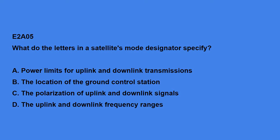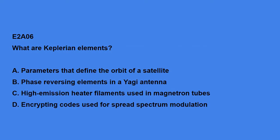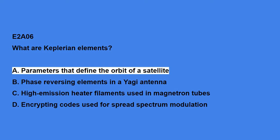E2A05: What do the letters in the satellite's mode designator specify? They specify the uplink and downlink frequency ranges. E2A06: What are Keplerian elements? The answer is: parameters that define the orbit of a satellite.